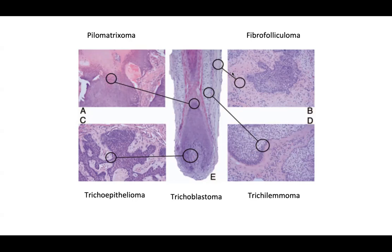Fibrofolliculomas are more differentiated from the outer fibrous sheath of the hair follicle. You do have areas that look basaloid, but there's also a lot of fibrous stroma and maybe some fibromyxoid stroma. If you cut a fibrofolliculoma in a different section, it's thought that trichodiscoma and fibrofolliculoma are essentially the same type of tumor. So if you rotate it and cut differently, you may get mostly fibrous stroma — that's going to be more of a trichodiscoma.